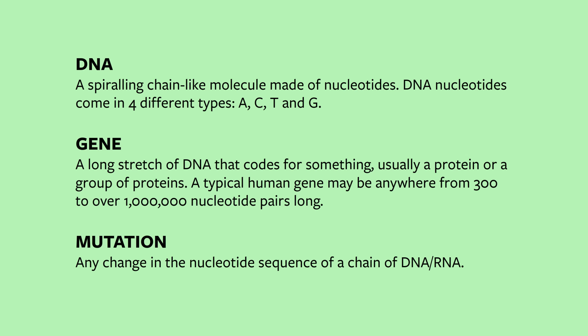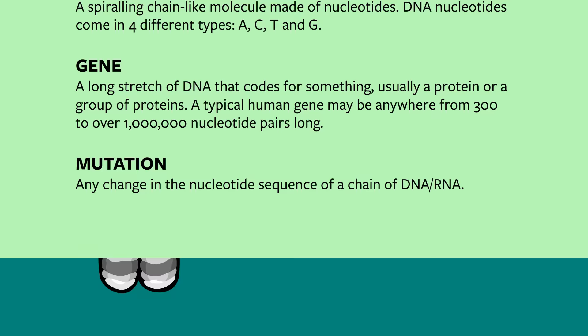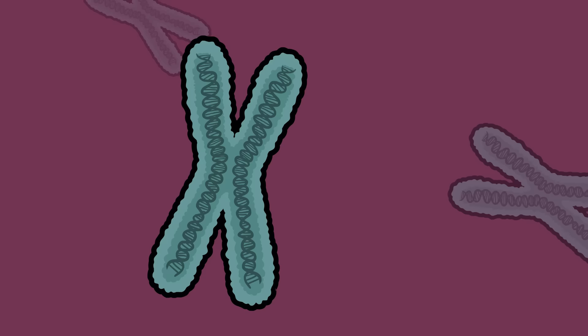Now that you clearly understand these three terms — and by the way, feel free to pause the video to study them if need be — it is now time to talk about chromosomes. A chromosome is an entire chain of DNA along with a group of stabilizing proteins.